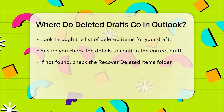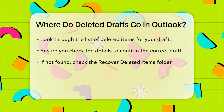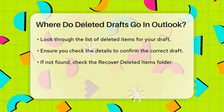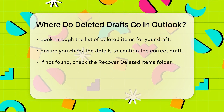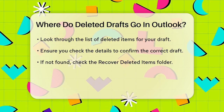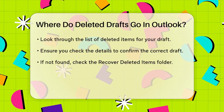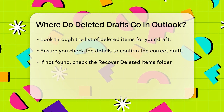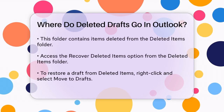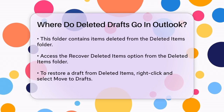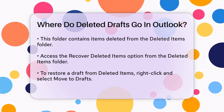If the draft is not in the Deleted Items folder, it might be in the Recover Deleted Items folder. This folder holds items that have been deleted from the Deleted Items folder and are still recoverable. To access this folder, go to the Deleted Items folder, then click on the Recover Deleted Items option, usually found in the upper left corner of the screen.